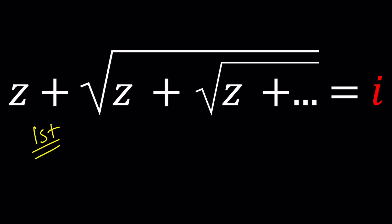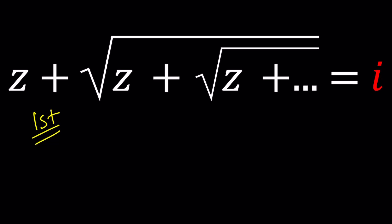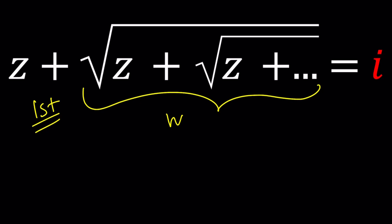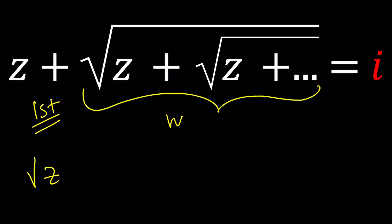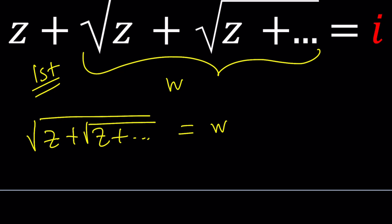Let's go ahead and see how we can do that by setting a variable. Let's use substitution and set this radical to W. So I'm basically saying that the square root of Z plus the square root of Z plus dot dot dot all the way to infinity is equal to W. If I can find W, hopefully I can find Z from there, right? That's the goal. But we also have a Z here.